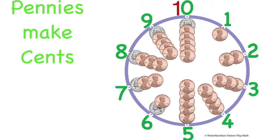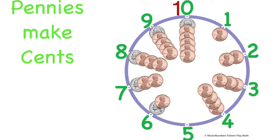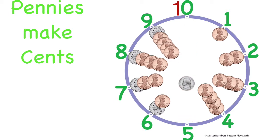Since numbers represent things, let's look at one penny at one, two pennies at two, three pennies at three, four pennies at four — and actually we do our five pennies when we replace those with a nickel. So there's a nickel, and then we have six, seven, eight, nine, and ten.